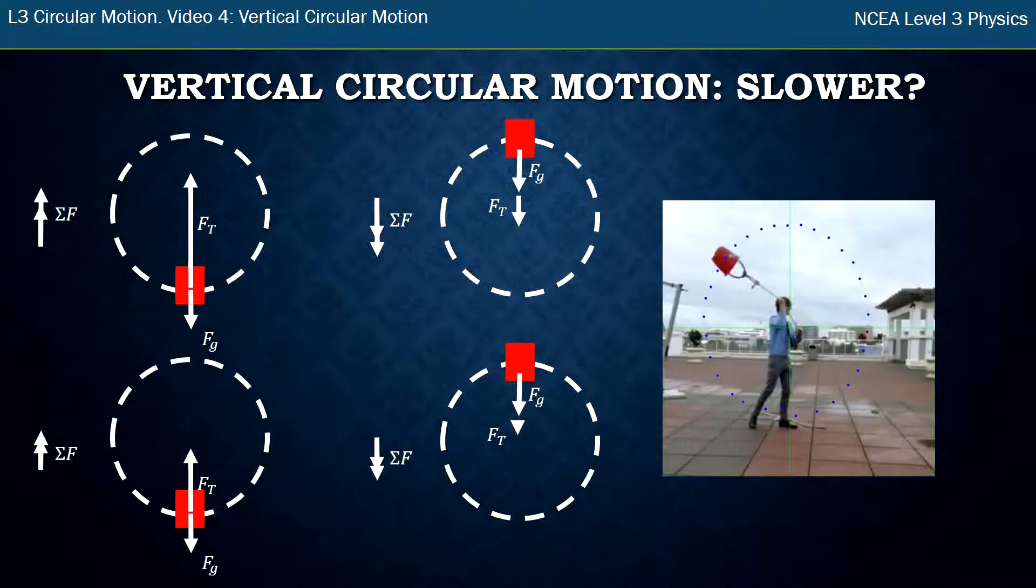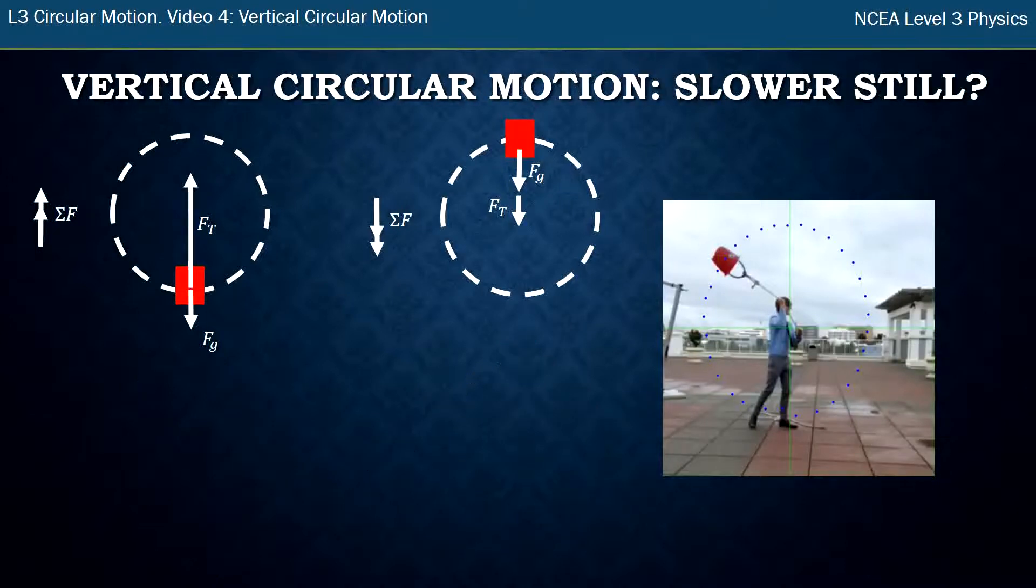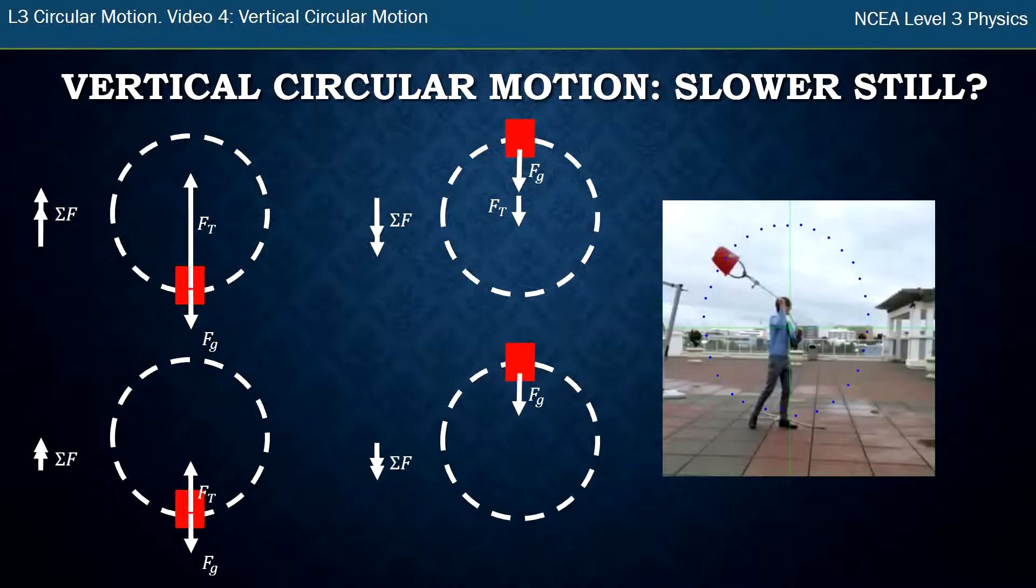You can extend this idea of the bucket going slower and the tension force getting smaller and smaller until you get to the point where the tension force upwards is only just bigger than gravity force downwards. And at the top gravity force downwards is the same size arrow as the total force. You don't need tension force in there.